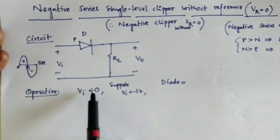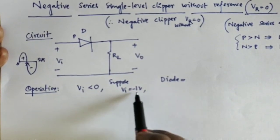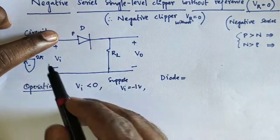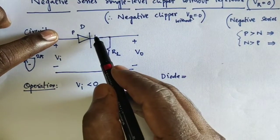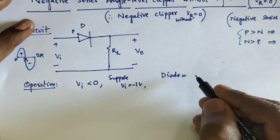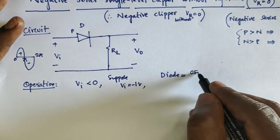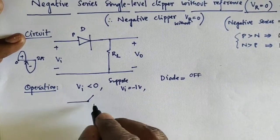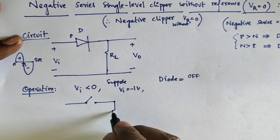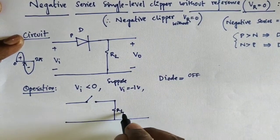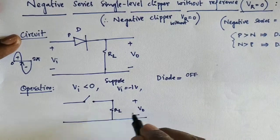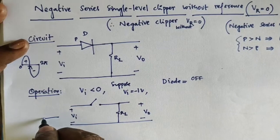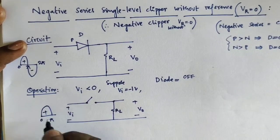Now we calculate the operation. We are applying VA less than 0. Suppose VA is minus 1 volt. The P-side value is minus 1 and the N-side value is 0, so the diode acts as off state. Based on this, the diode is off. We now design the circuit diagram for this. The circuit has load resistor RL and output voltage V0. We are applying input value VA from 0 to pi.